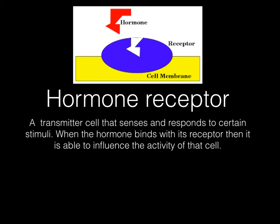Hormone receptors are transmitters of a cell that sense and respond to certain stimuli. When the hormone binds with its receptor, it is able to influence the activity of that cell. Not every cell is going to be affected by certain hormones — they have to have a certain receptor. You can see up here a simplified version where this hormone kind of fits into place with this receptor in the cell membrane. If it's happening in the cell membrane, then it is going to be an amino acid hormone.